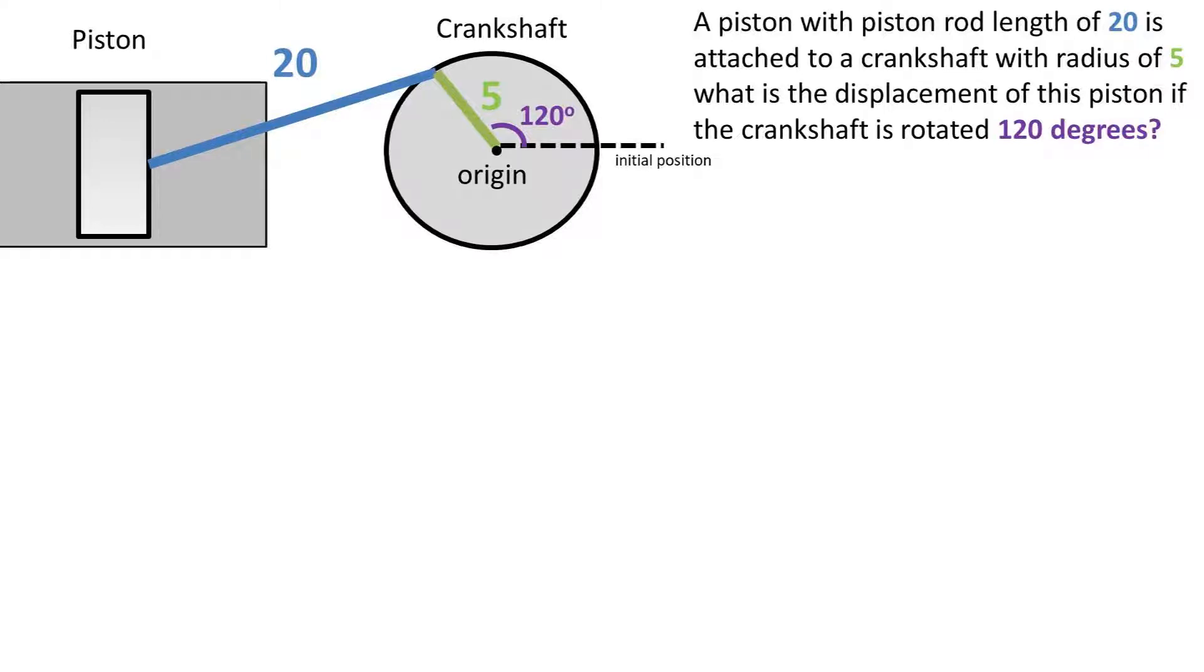A piston with a piston rod length of 20 units long is attached to a crankshaft with a radius of 5 units. What is the displacement of the piston if the crankshaft is rotated 120 degrees from initial position as depicted?